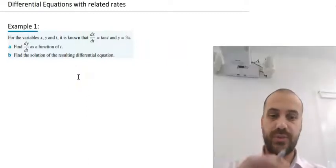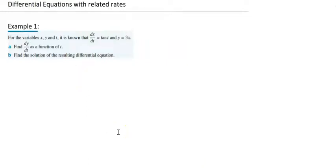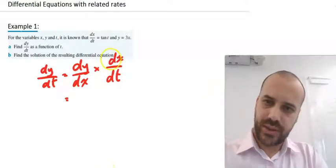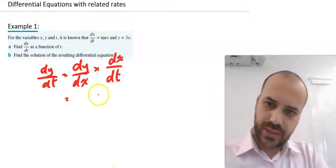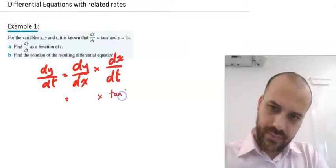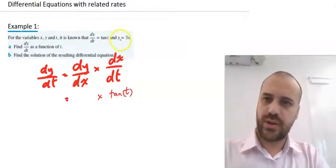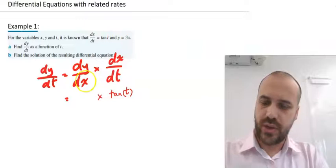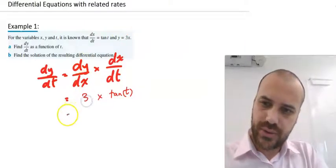Now this first example is relatively straightforward. We find dy/dt, so we know that dy/dt is equal to dy/dx times dx/dt. We find our third variable, which looks like it's going to be x. And then we start subbing in what we know. In this example, we know that dx/dt equals tan t and we know that if y equals 3x, dy/dx is going to be equal to 3.